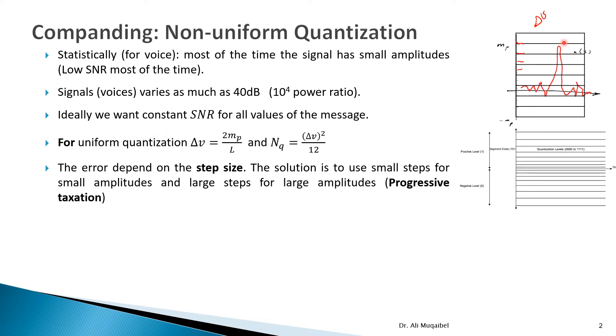So instead of having uniform quantization, we're going to have non-uniform quantization. We have smaller delta V for most of the time, and whenever we have high, the taxation or the spacing becomes larger. So this is uniform, and this is non-uniform.